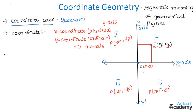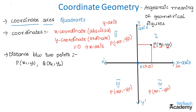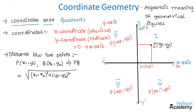Now let us discuss the next concept: distance between two points. Consider two points P and Q; the distance PQ is given by the formula: PQ = √[(x1 − x2)² + (y1 − y2)²]. Here the first term is the difference of x-coordinates and the second term is the difference of y-coordinates. Note that the distance PQ always equals the distance QP.